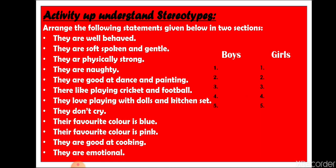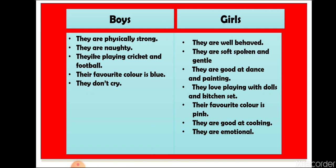In the boys column: they are physically strong, they are naughty, they like playing cricket and football, their favorite color is blue, they don't cry. Regarding girls: they are well behaved, they are soft spoken and gentle, they are good at dance and painting, they love playing with dolls and kitchen sets, their favorite color is pink, they are good at cooking, they are emotional. What we are doing here is assigning some qualities to boys and some to girls based on our experiences — without knowing a particular boy or girl.